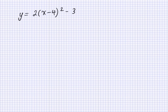So this is the equation in vertex form, which is y equals a times x minus h squared plus k. What does a tell you? So if a is positive, it tells us that the parabola opens up.